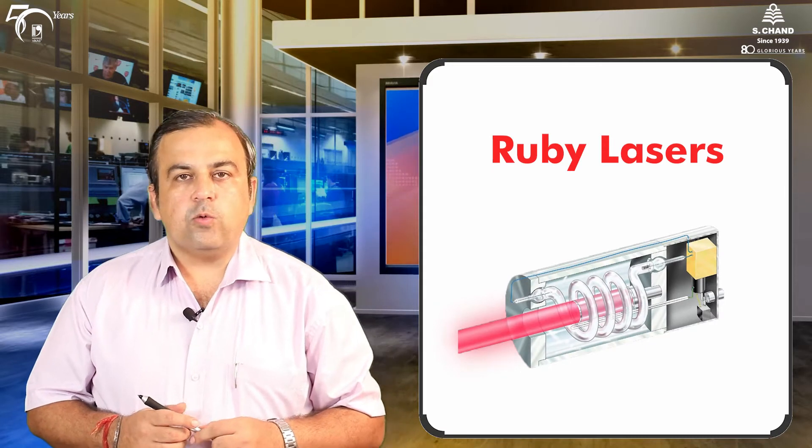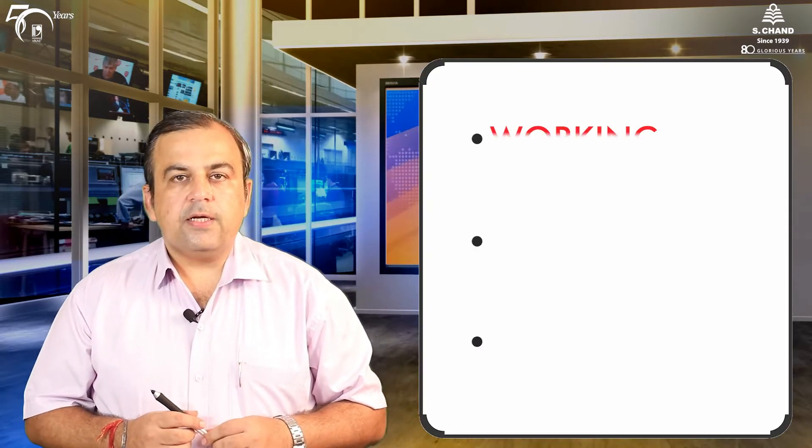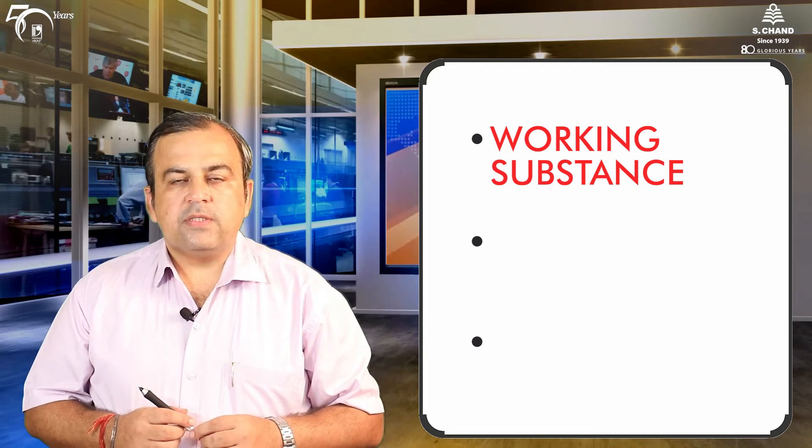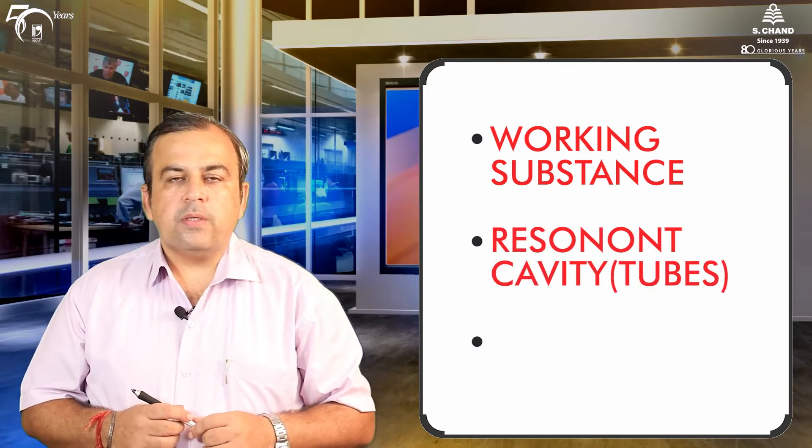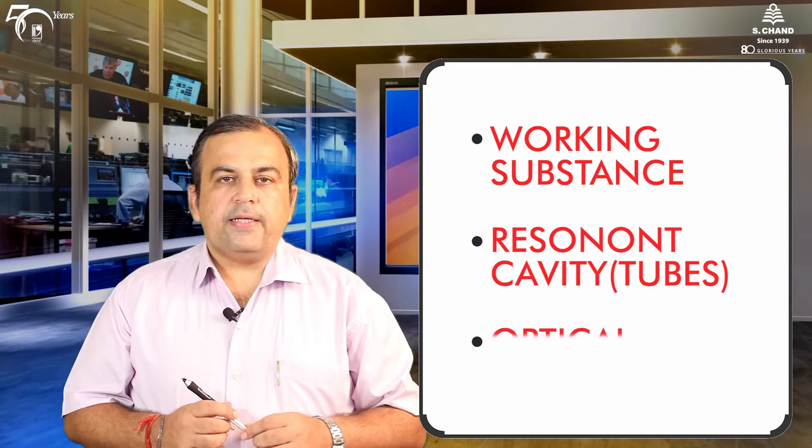I hope you all have heard about Ruby lasers. As we talked in the previous sessions, there are three important mechanisms — three important points which should be taken care of for any lasing action. One is the working substance, second is that cylindrical tube, and the third one is the pumping system.